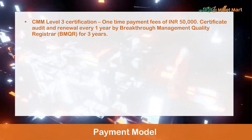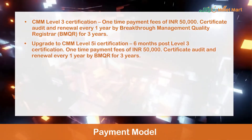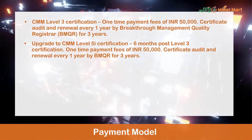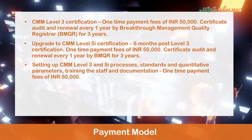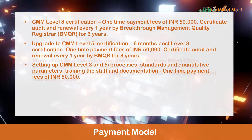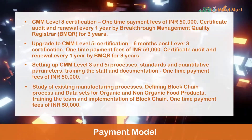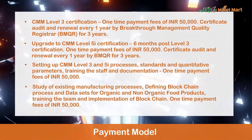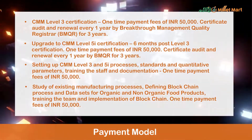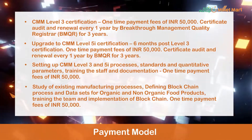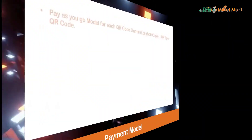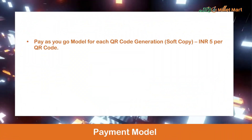Payment model: CMM Level 3 certification — one-time payment fee of 50,000 rupees. Upgrade to CMM Level 5i certification six months post Level 3 — one-time payment fee of 50,000 rupees. Setting up CMM Level 3 and 5i processes, standards, quantitative parameters, staff training, and documentation — one-time payment fee of 50,000 rupees. Study of existing manufacturing processes, defining blockchain process and data sets for organic and non-organic food products, training the team and implementation of blockchain — one-time payment fee of 50,000 rupees. Pay-as-you-go model for each QR code generation (soft copy).